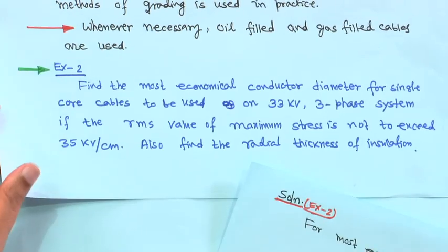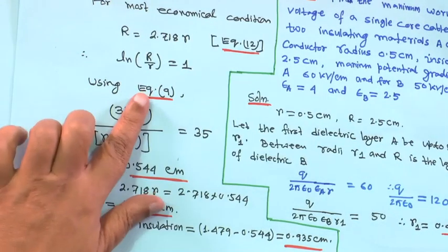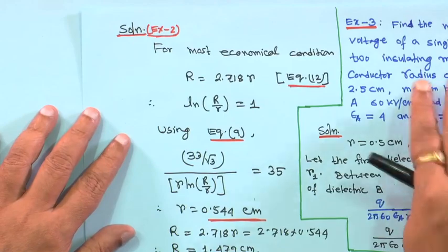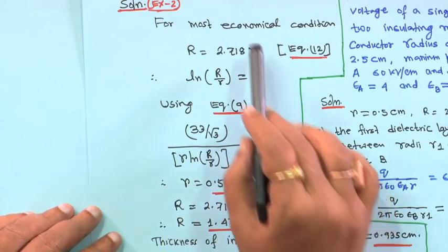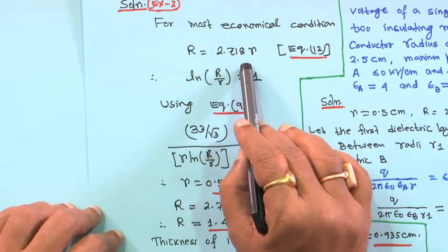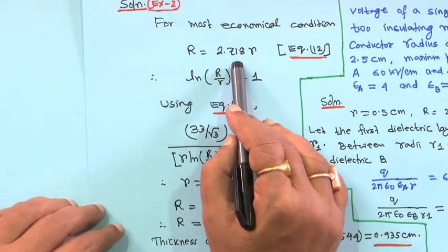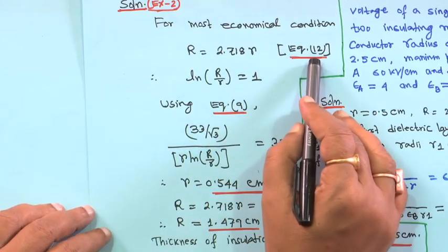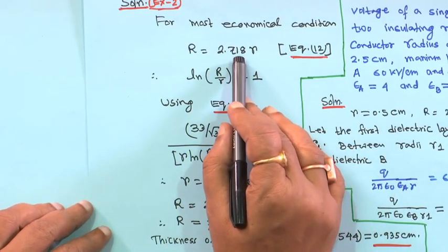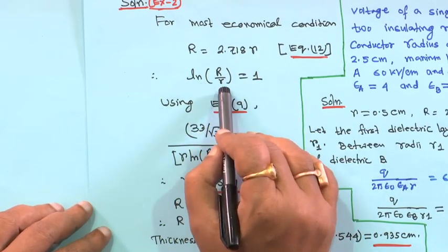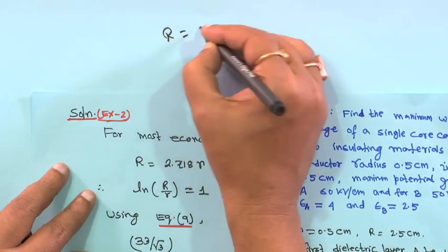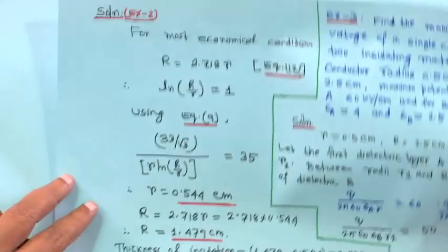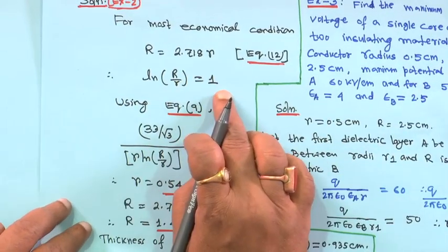We also need to find the radial thickness of insulation. For the most economical condition, we know capital R is equal to 2.718 times small r — this is equation 12. That means ln(R/r) is equal to 1, because capital R is equal to e times small r.